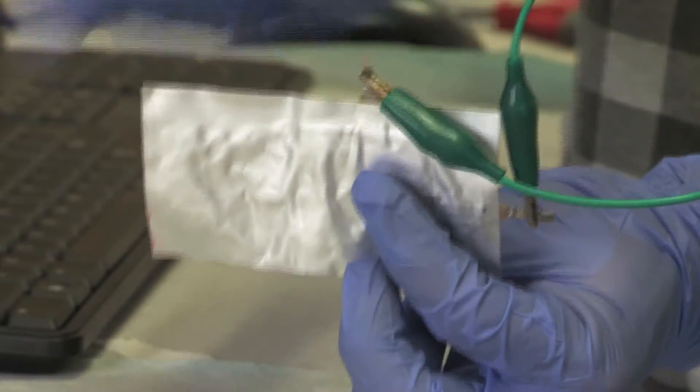This is the aluminum battery we have. It's made of aluminum and graphite. Both materials are quite cheap.